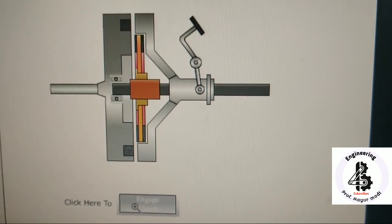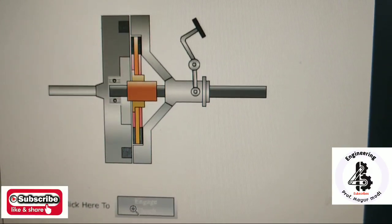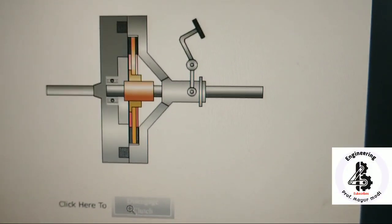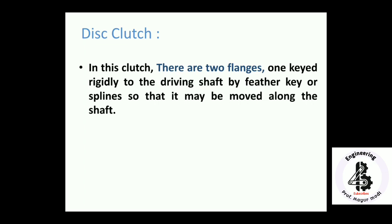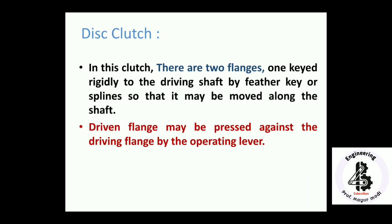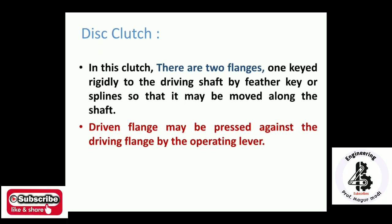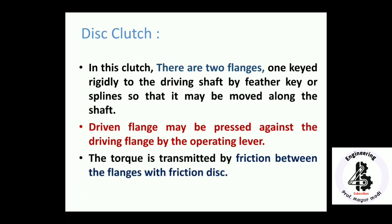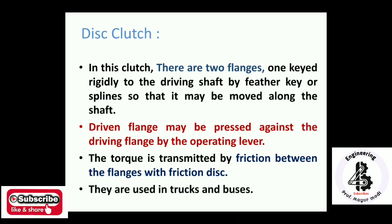The animated view of a disc clutch shows engagement by application of a foot pedal. In the disc clutch, there are two flanges: one keyed rigidly to the driving shaft using a feather key or splines, so it may move along the shaft. The driven flange may be pressed against the driving flange by operating a lever. Torque is transmitted by friction between the flanges with a friction disc. These are used in trucks and various buses.